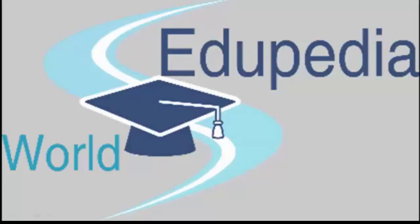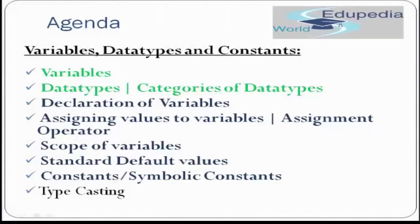Hello friends, welcome to the Edopedia world. This video is in continuation with the previous tutorial video. In our previous tutorial, from the topic variable data types and constants, we covered variables, data types, and category of data types. In this tutorial, we'll begin learning from declaration of variables, and I am targeting to complete five topics: declaration of variable, assigning values to variable, assignment operator, scope of variable, standard default values, constant, and symbolic constant.